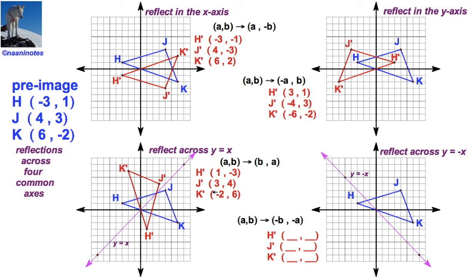If h is negative 3, positive 1, h-prime is negative 1, positive 3. If j is 4, 3, j-prime is going to be negative 3, negative 4. And if k is 6, negative 2, then k-prime is going to be 2, negative 6.